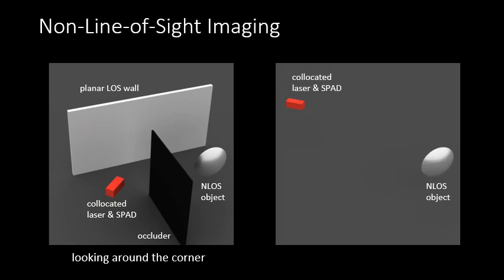Alternatively, the object may be within the field of view of the sensor but occluded from it through some optically thick diffuser, for example, a piece of paper. We refer to this scenario as looking through a diffuser.